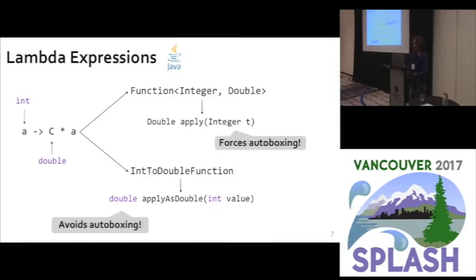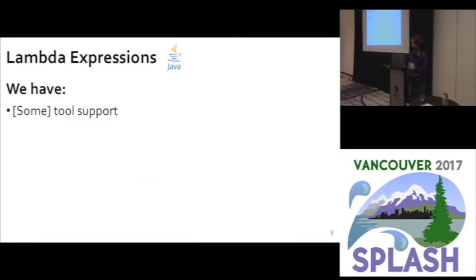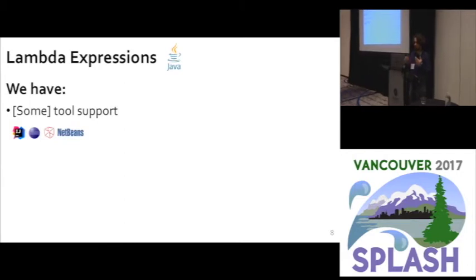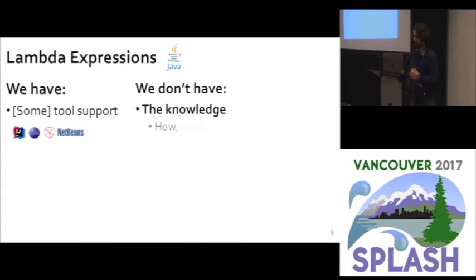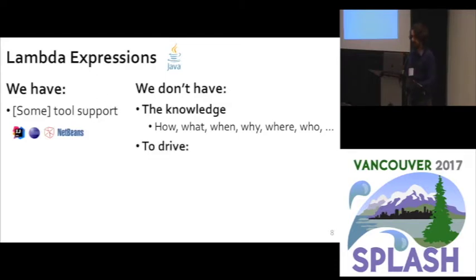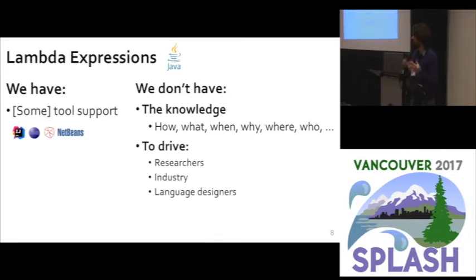That was the moment we realized we have some tool support for lambda expressions — for instance, refactoring anonymous classes to use lambda expressions — but what we lack is tool support for things like detecting misuse of functional interfaces. More broadly, we lack knowledge about how developers take advantage of lambda expressions: what features are used, when they're used, and why. This knowledge is necessary to drive researchers, industry, and language designers toward the right decisions, and to help developers make the best use of lambda expressions.